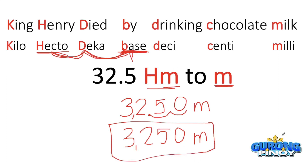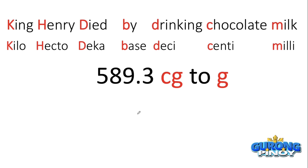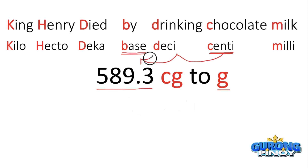For the second example, we have 589.3 centigrams, and we're converting to the base unit of grams. Since grams has only one letter with no prefix, it's a base unit. From centi, we move to the base unit — that's one, two movements to the left. We copy the number 589.3 and move the decimal point two times to the left.